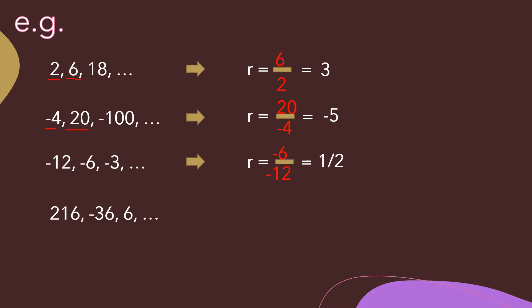For the sequence 216, negative 36, positive 6, we use the second term negative 36 divided by the first term positive 216. Dividing these two properly, the common ratio of this geometric sequence is negative 1 over 6.